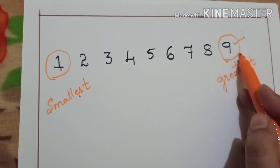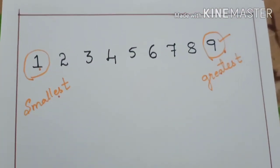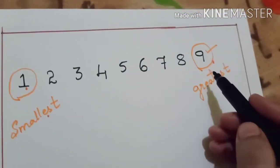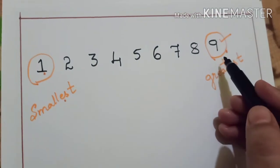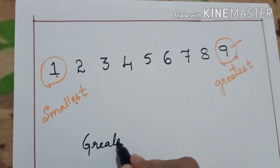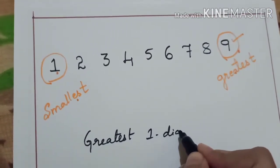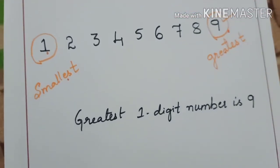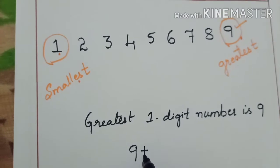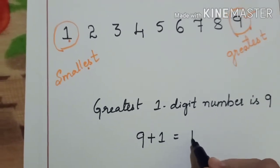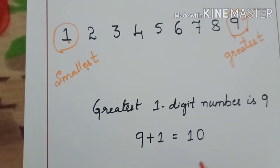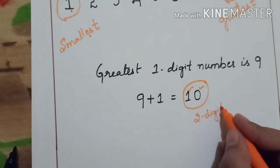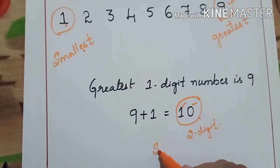Smallest one-digit number is 1 and greatest one-digit number is 9. Let us see what happens when we add 1 to this greatest one-digit number. 9 plus 1 — what is the answer we got? 10. How many digits are there in 10? 1 and 2 — it is a 2-digit number. And this is the smallest 2-digit number.